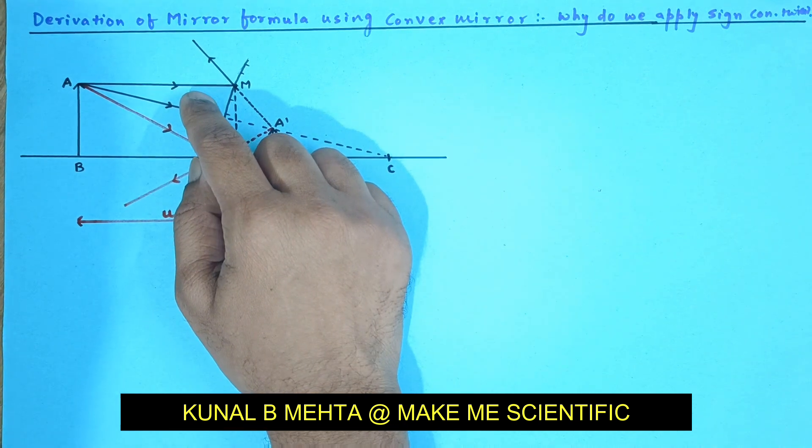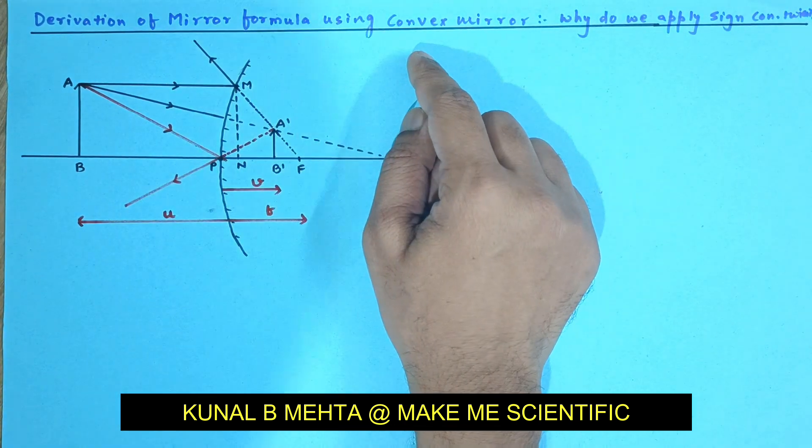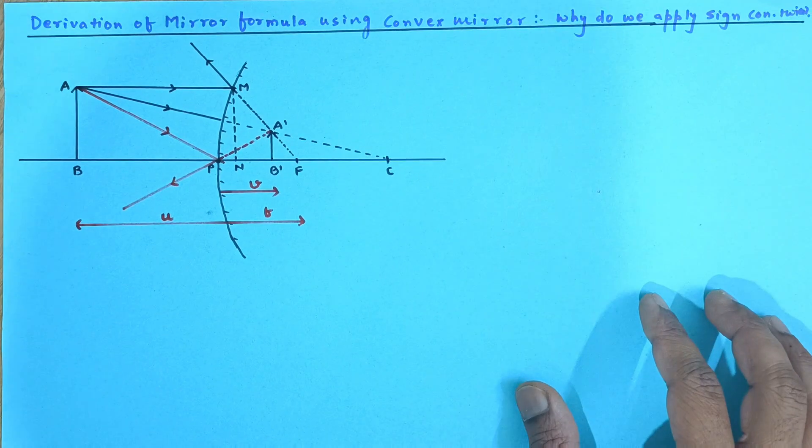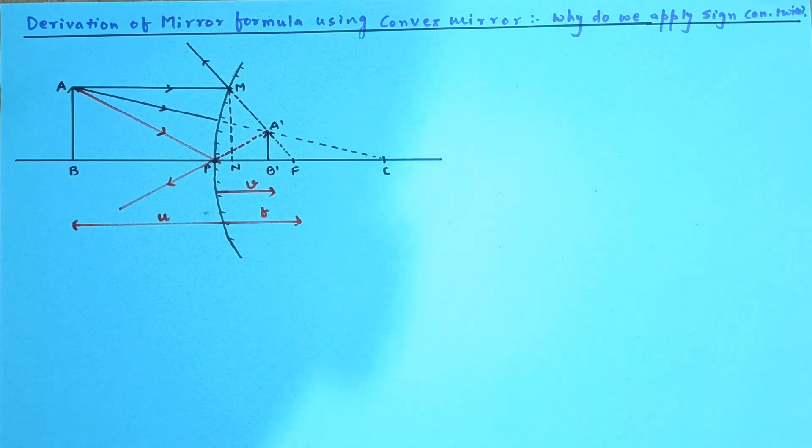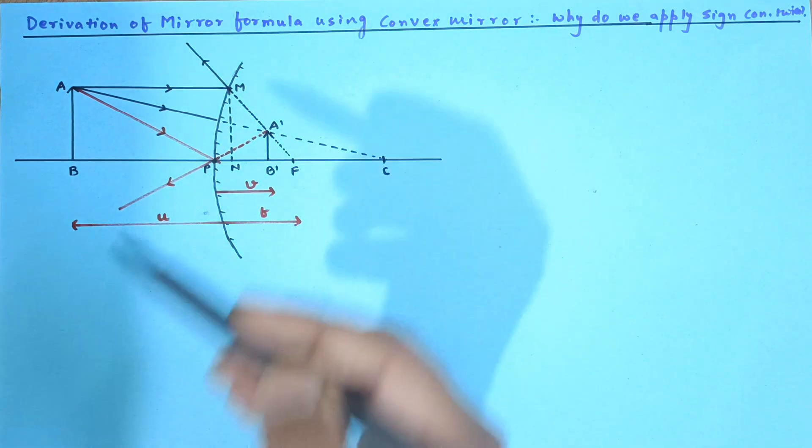I am going to derive the mirror formula using the convex mirror and we will also understand why we apply the sign convention twice, one while derivation, another while solving the numericals.